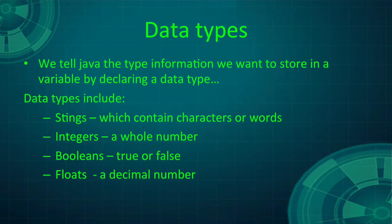Data types include strings, which contain characters or words; integers, which are whole numbers; booleans, which are true or false; and floats, which are decimal numbers.